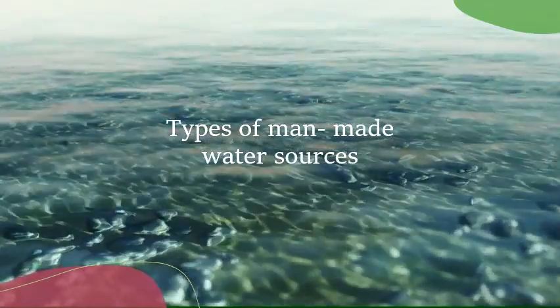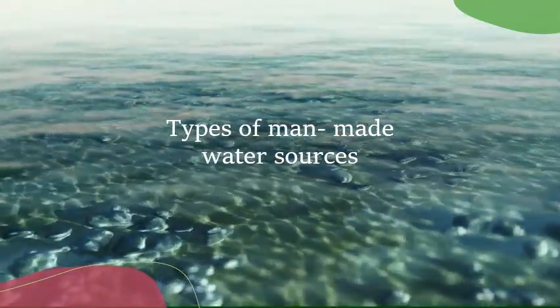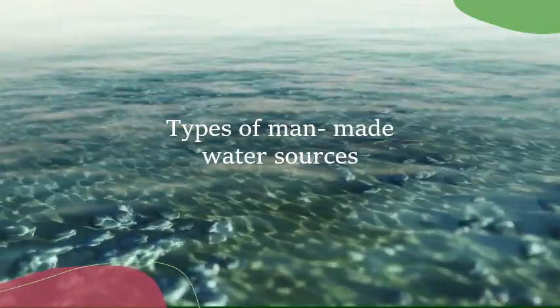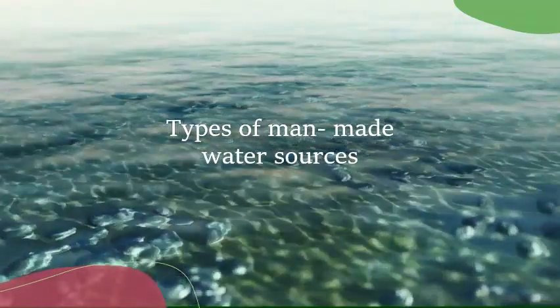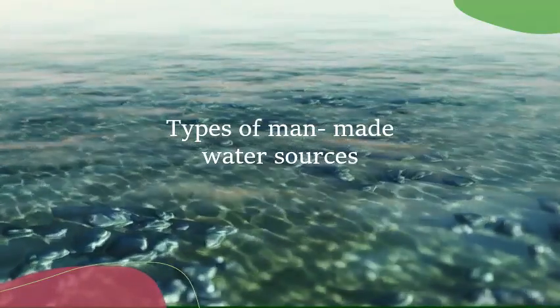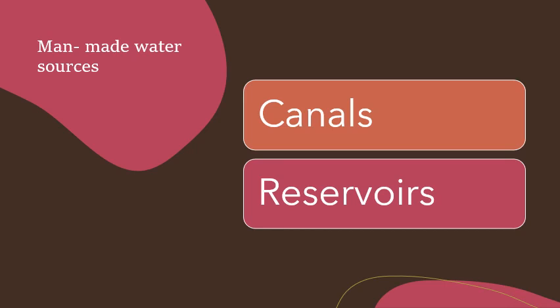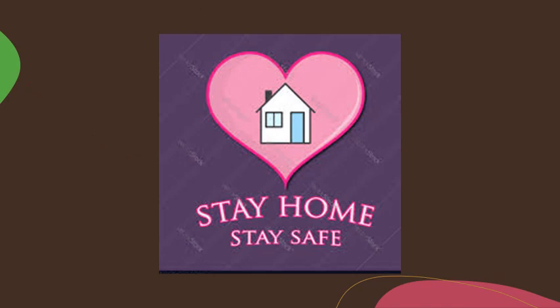Now we'll see a little bit about man-made water sources. The previous ones are natural water sources, which are naturally present on the earth. These are man-made water sources. The man-made water sources are canals and reservoirs. We will learn about them properly in the next video. I hope you understood what surface waters are and what the natural water sources are. So stay home, stay safe, take care of yourself and keep learning children. I hope you are doing the exercises in your textbooks and workbooks. Find out the answers and write them in both the books. Thank you, children.